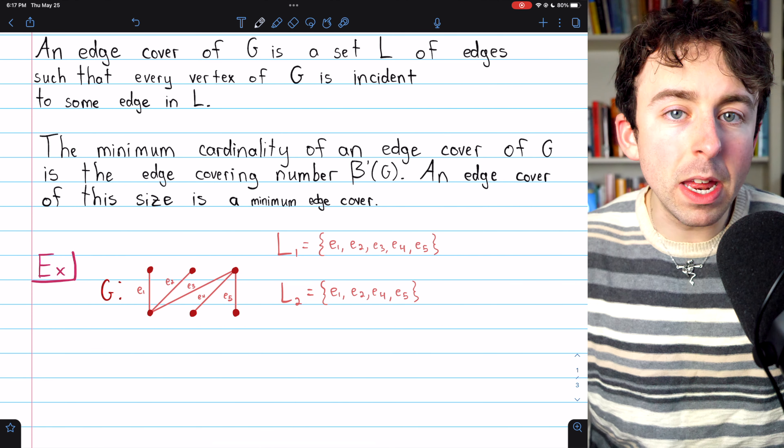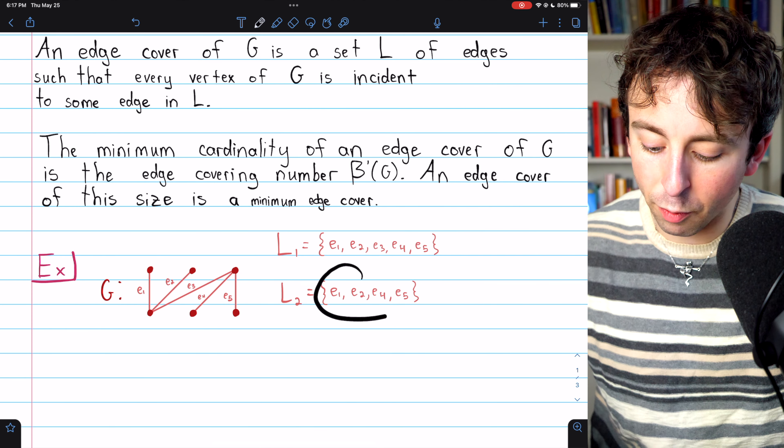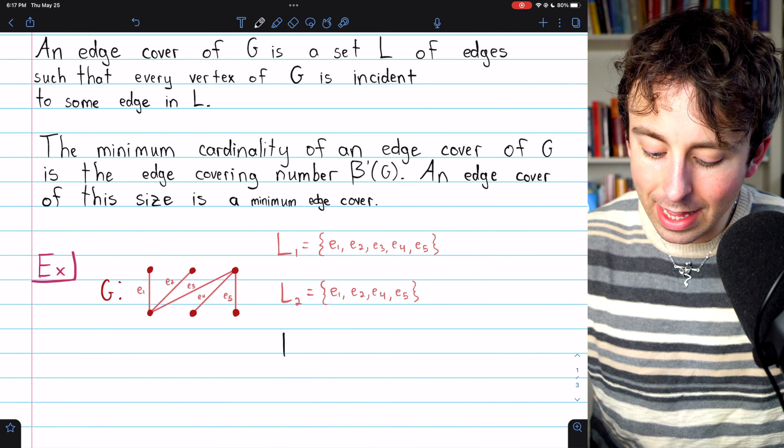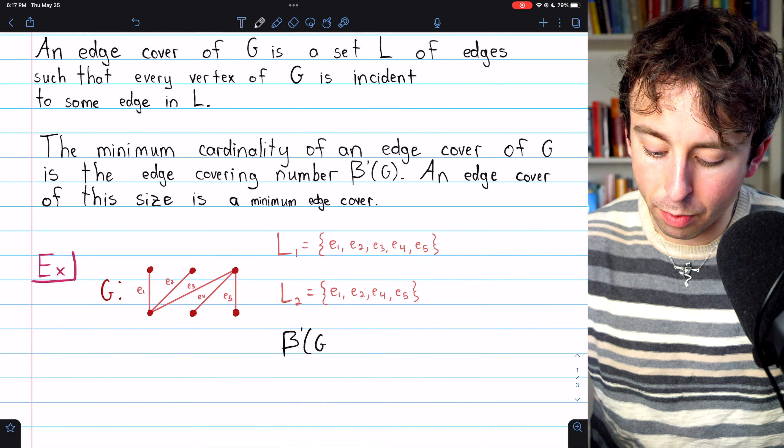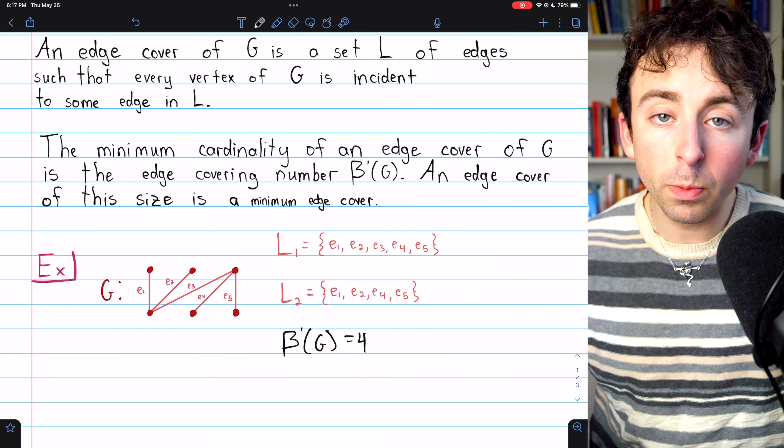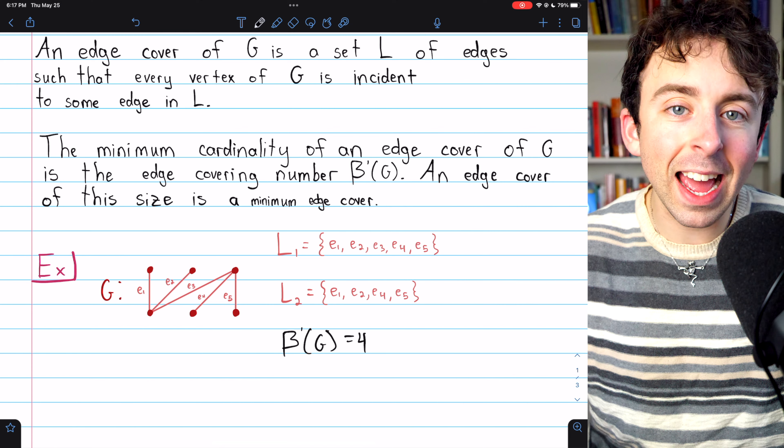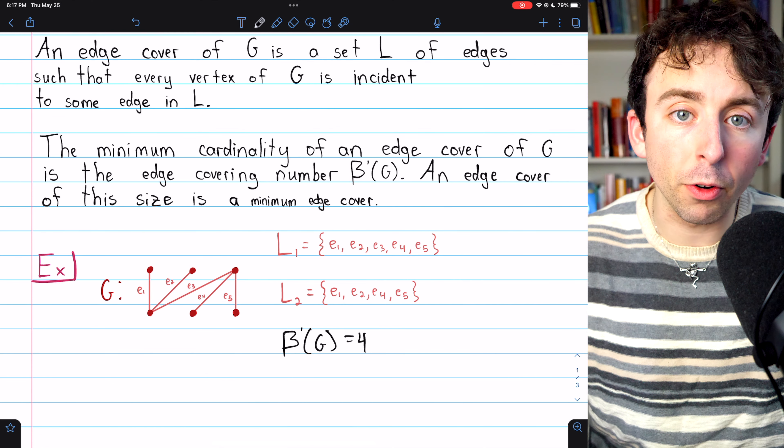And since this minimum edge cover contains four edges, we could say that the edge covering number of G, written like this, beta prime of G, is equal to four, because that's the cardinality of a minimum edge cover of the graph.